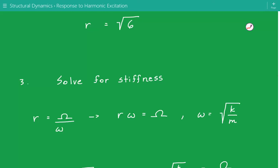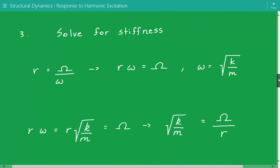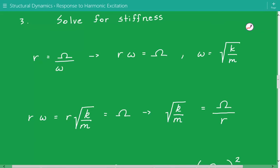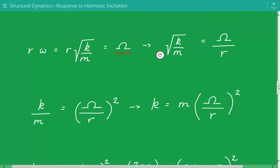We rearrange this equation: r times lowercase omega equals capital omega, and lowercase omega is equal to the square root of k over m. So r times the square root of k over m equals capital omega, the excitation frequency. We rearrange this equation and solve for k, so k equals m times capital omega divided by the frequency ratio squared.